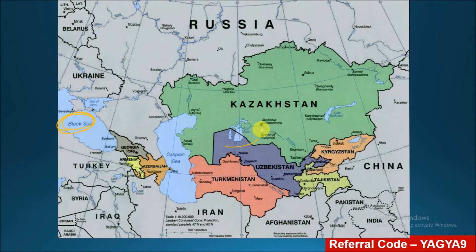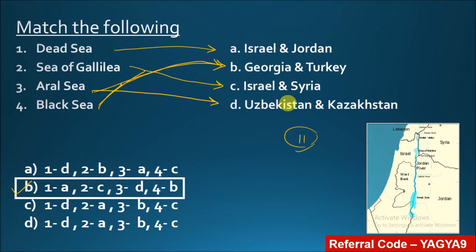As you can see on the map, the Aral Sea is between Kazakhstan and Uzbekistan. The Sea of Galilee is between Israel and Syria. The Dead Sea is between Israel and Jordan. If arranging from north to south, Sea of Galilee is above and Dead Sea is below — Israel's northern neighbor is Syria and the southern boundary is with Jordan.